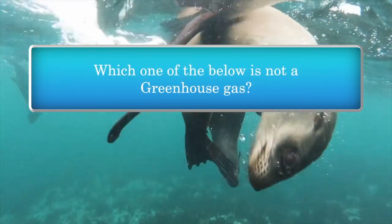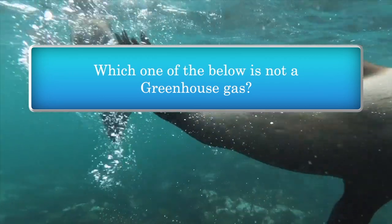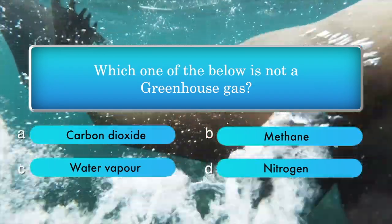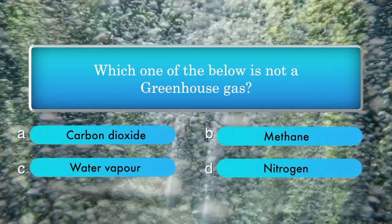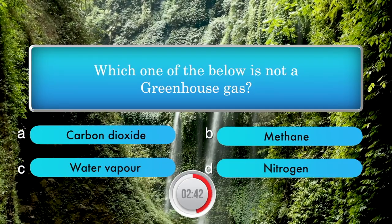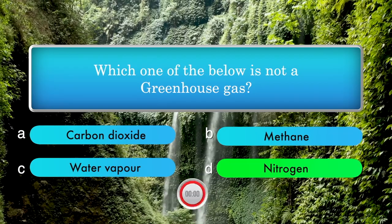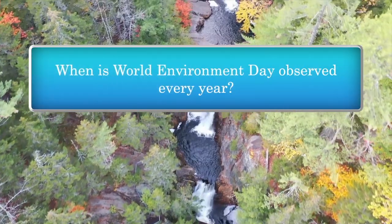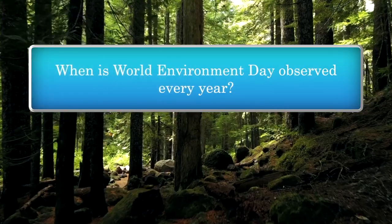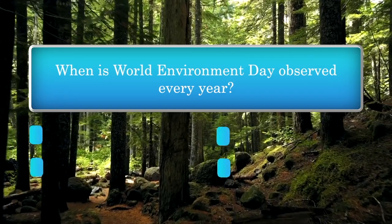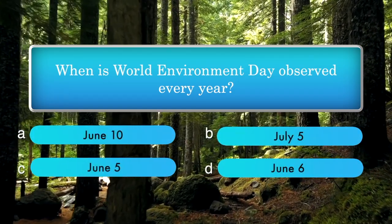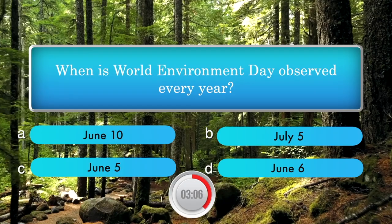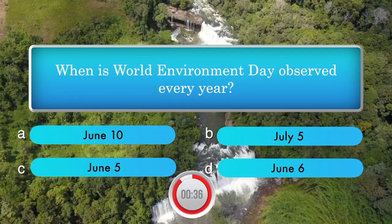Which one of the below is not a greenhouse gas? Options: carbon dioxide, methane, water vapor, nitrogen. Answer is nitrogen. When is World Environment Day observed every year? Options: June 10th, July 5th, June 5th, June 6th. Answer is June 5th.